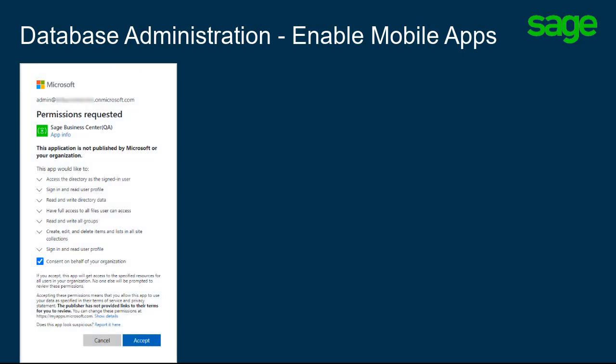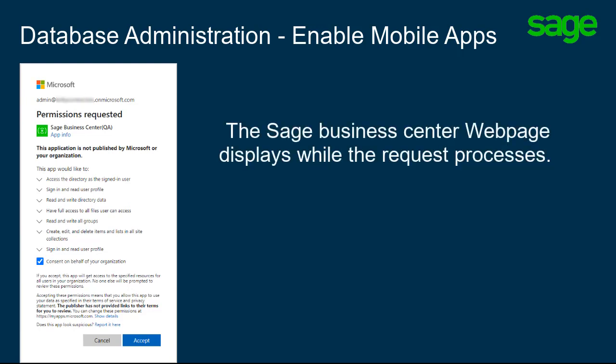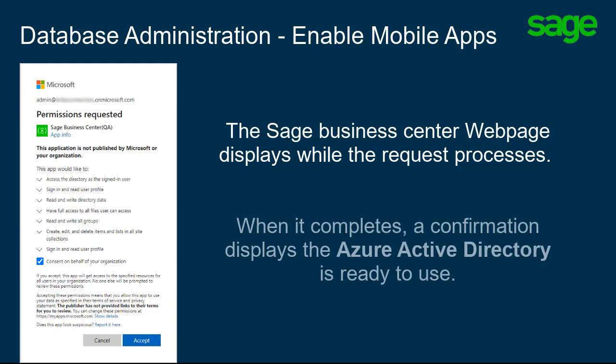Review the information and select the appropriate boxes, then click Accept. The web page for Sage Business Center displays while your request processes. When it completes, you receive a confirmation that your Azure Active Directory is ready to use.